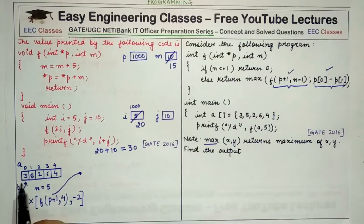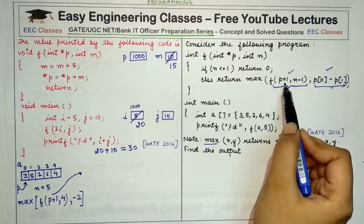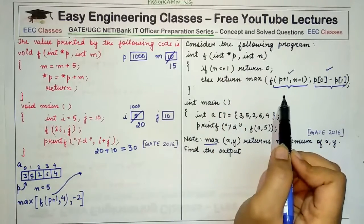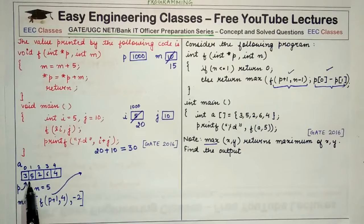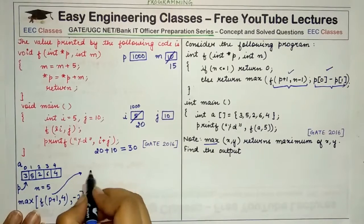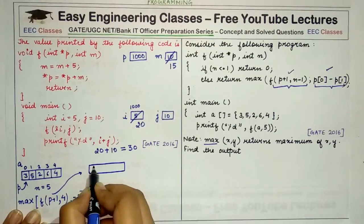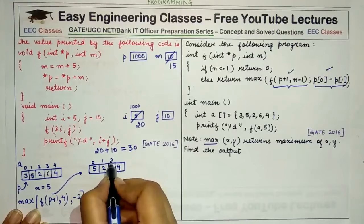Currently p points to the starting location of array a. When we pass p plus 1 to the next call, we are passing the array starting from index 1 — so instead of [3, 5, 2, 6, 4], we are now passing [5, 2, 6, 4]. The value of p is incremented by one element.